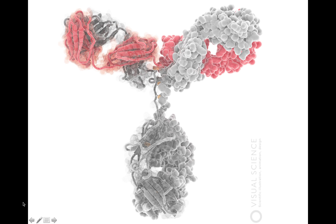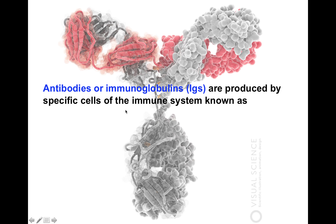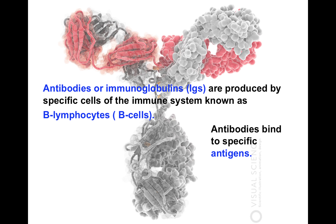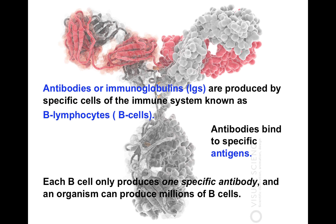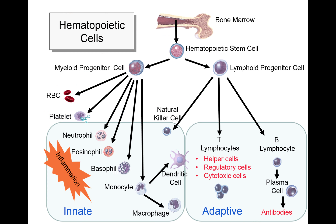This is a diagram of an immunoglobulin. On this side it's the space-filling model, and on this side it's the ribbon diagram. The gray are the two heavy chains, and the red are the two light chains. Antibodies, or immunoglobulins (IGs), are produced by specific cells of the immune system known as B lymphocytes, or B cells for short. Antibodies bind to specific antigens. Each B cell produces only one specific antibody, and an organism can produce millions of B cells.